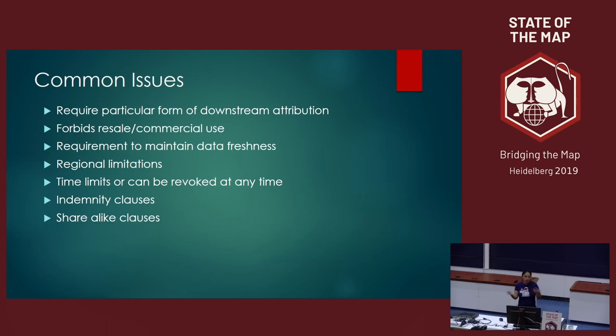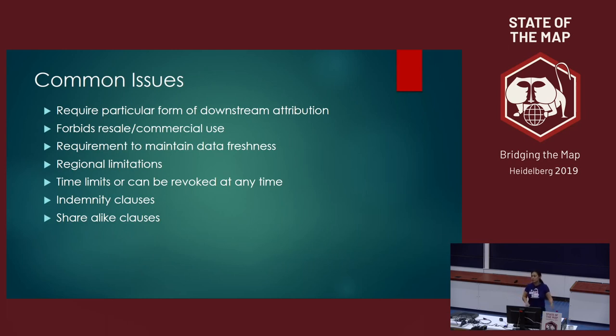The main things to look at: first, attribution — whether it allows flexible attribution. A lot of data might have a non-commercial limitation, and because anyone can use OSM — companies can use it and resell that data — a non-commercial limitation is not going to be compatible. They do need to link back to OSM so other people can download it for free, but a non-commercial restriction on the source data won't work.